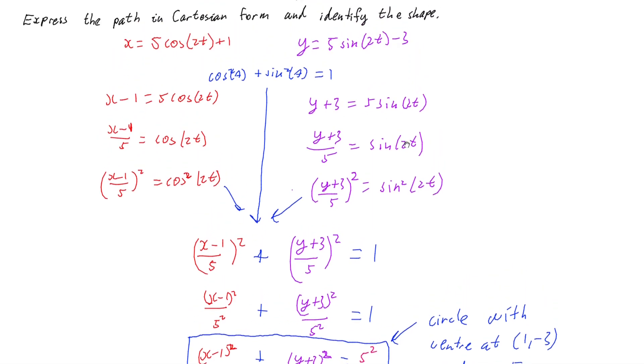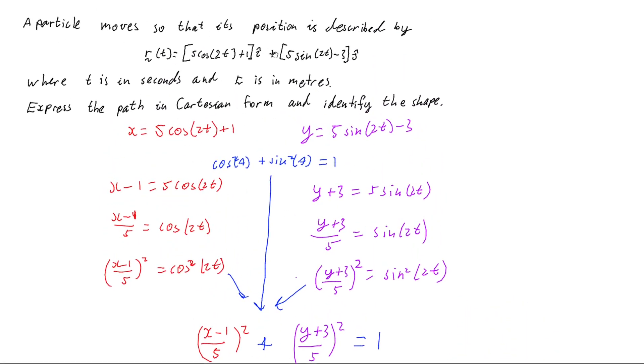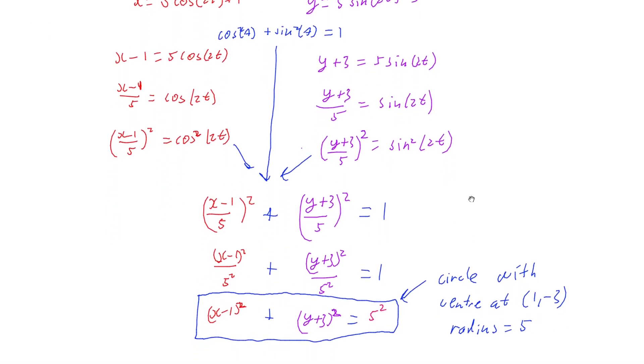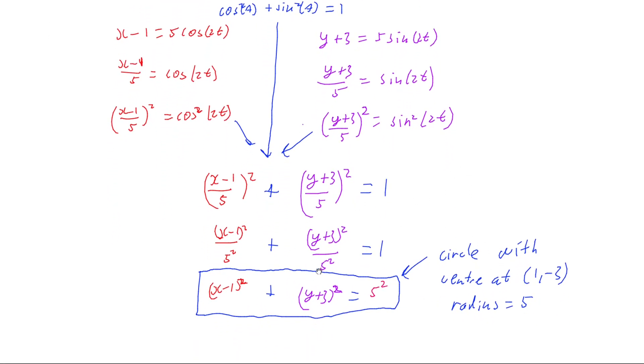So there we go. If we have motion given to us by a vector equation, we can still treat it as a parametric equation because that's what it is and convert it into Cartesian form. And from that we can identify what shape we have that the particle is following.